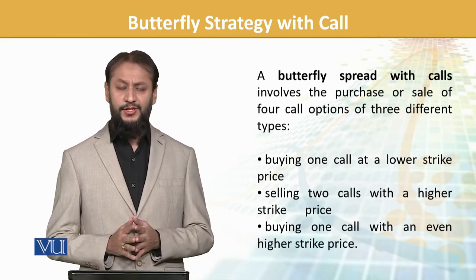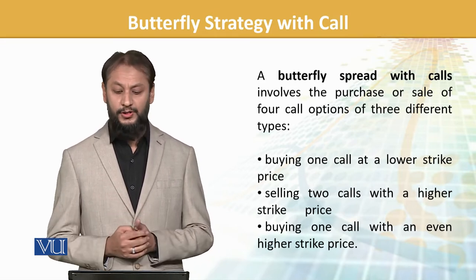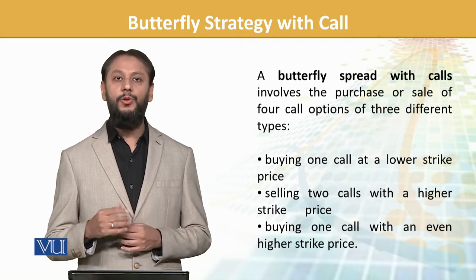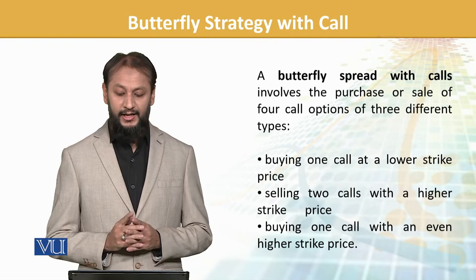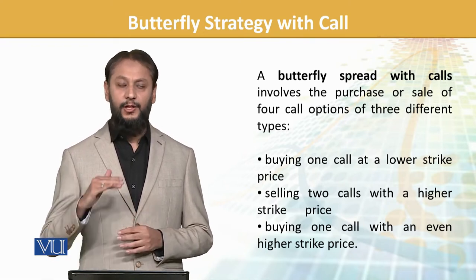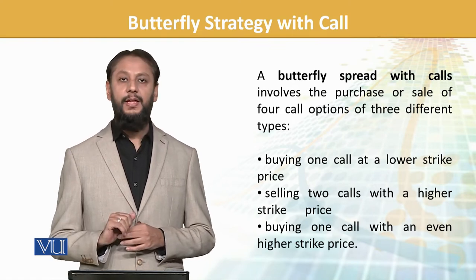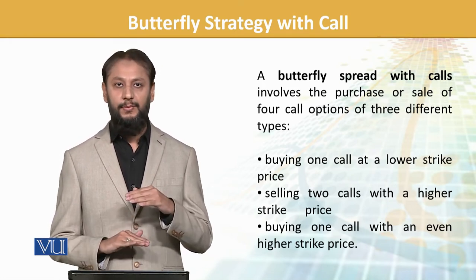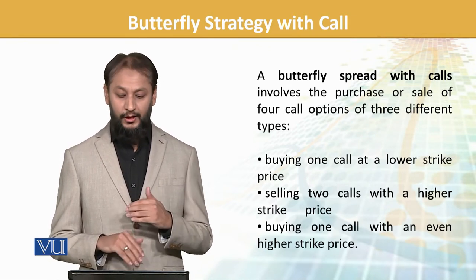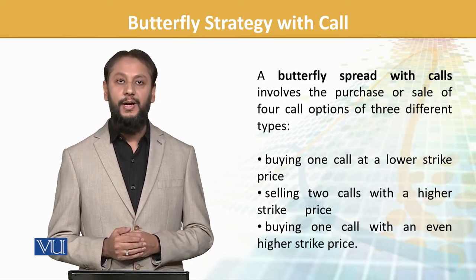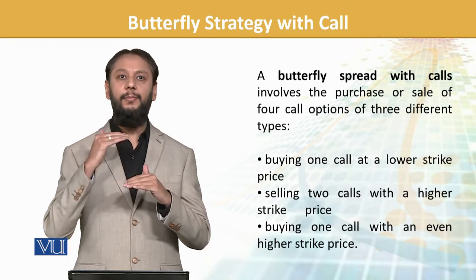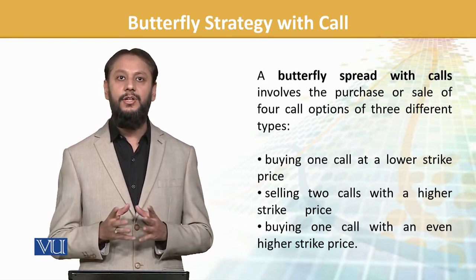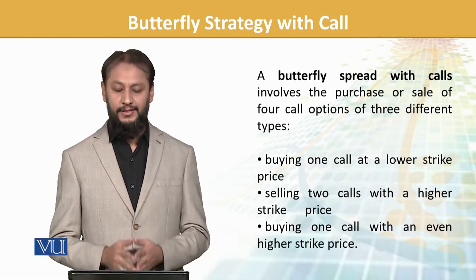A butterfly strategy with calls involves the purchase or sale of four call options of three different types. Abh yahan hum pehle 2 tak dekh rahe thay, is mein hum four call options ke sath khel rahe hain. Buying one call option at a lower strike price — low strike price ki humne call option kharidi. Phir selling two calls at a higher (middle) strike price — do mid level mein hum short ho gaye. And buying one call at an even higher price — yani bottom pe li, do sell kare, aur ek top pe buy kari. So do buy hain, do sell hain — yeh humari strategy hai.